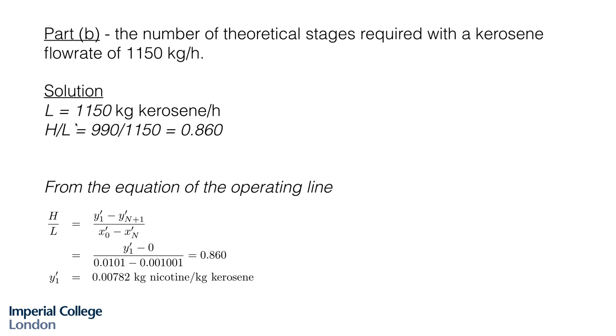This part of the problem is very straightforward because we can calculate the gradient of the operating line. H over L is 0.86. We can plug that in to our equation for the operating line. From these four quantities here, we know three of them. We know the feed and final concentration in the aqueous phase. We know the fresh solvent feed has concentration of 0 because it's pure kerosene. So we can rearrange that equation to solve for Y1, which is the final concentration of nicotine in the organic phase, 0.00782. That also makes sense because this is lower than the concentration we calculated when we used the minimum solvent flow rate. You would expect using more solvent that the final concentration would be lower or more dilute.